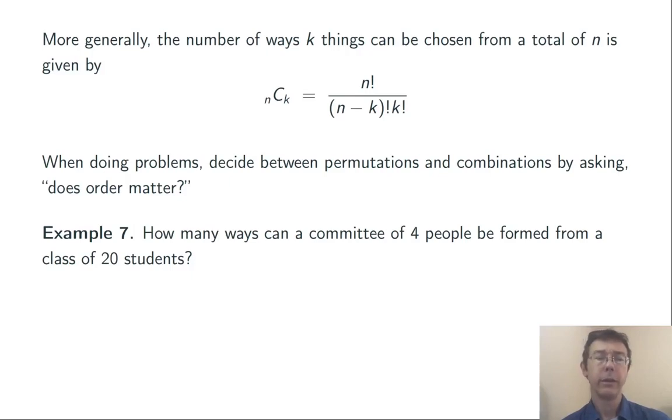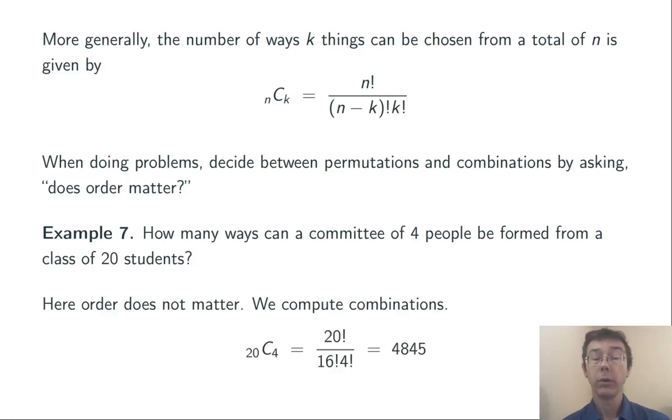Let's have a few examples. How many ways can a committee of 4 people be formed from a class of 20 students? Does order matter here? No, it doesn't matter what order we choose the students. They're all going on to a committee. So, we need to do 20 choose 4. 20 factorial over 16 factorial times 4 factorial. 4,845.